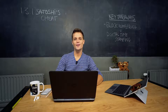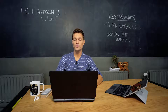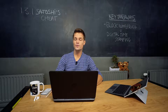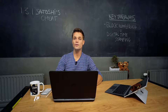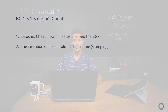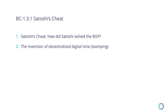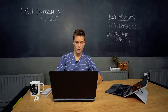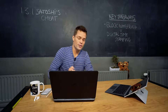Satoshi's Cheat 1.3. We already discussed how Satoshi solved the consensus problem by structuring rules so that nodes need to follow the longest chain. Did Satoshi actually solve the Byzantine general problem? That's what we will discuss, as well as the new invention Satoshi managed to introduce: digital timestamping. Let's dive into the next slide.